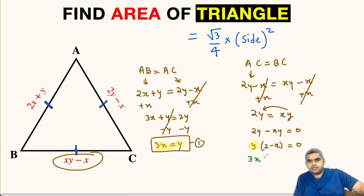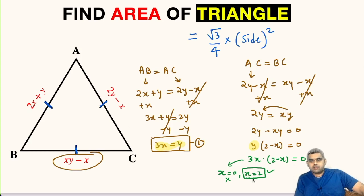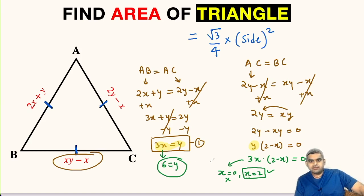So this becomes 3X times (2 minus X) equals 0, which is now an equation in a single variable X. From here we get either X equals 0 or X equals 2. We reject X equals 0 because if X equals 0 then Y will also be 0, which is meaningless. So X equals 2, and substituting back gives Y equals 3 times 2, which is 6.